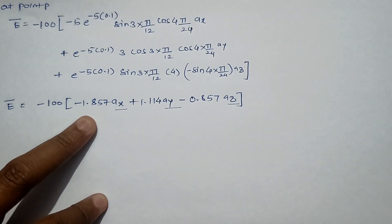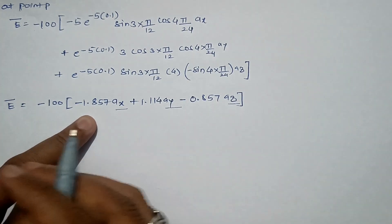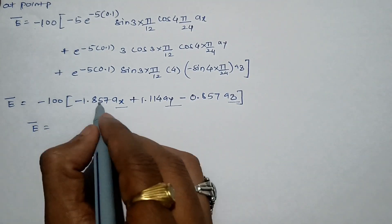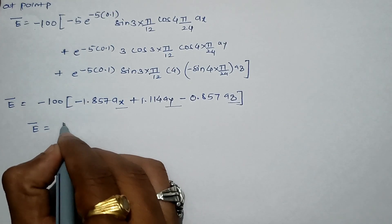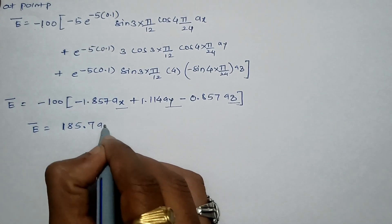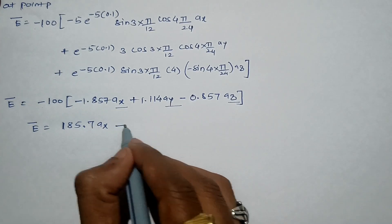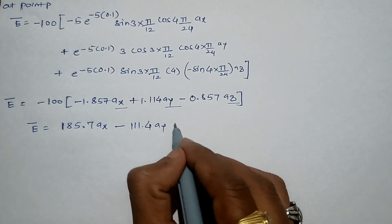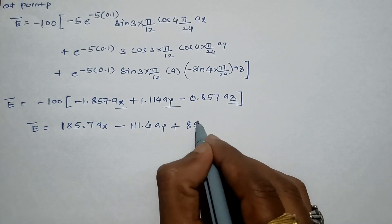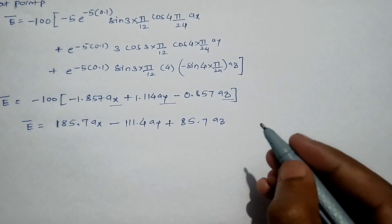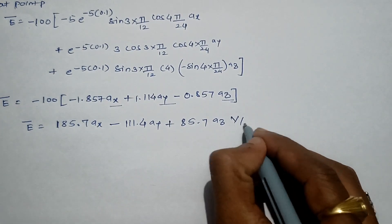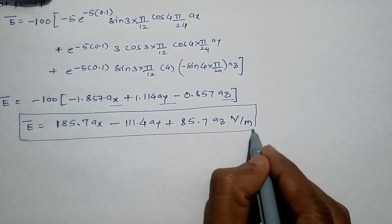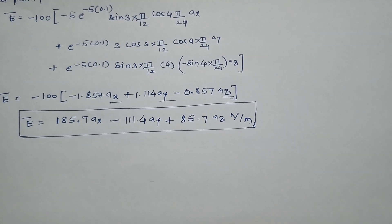Using radian mode, we get E⃗ = 185.7 ax - 111.4 ay + 85.7 az volts per meter. The unit of electric field intensity is volts per meter. This is the answer to our second question.